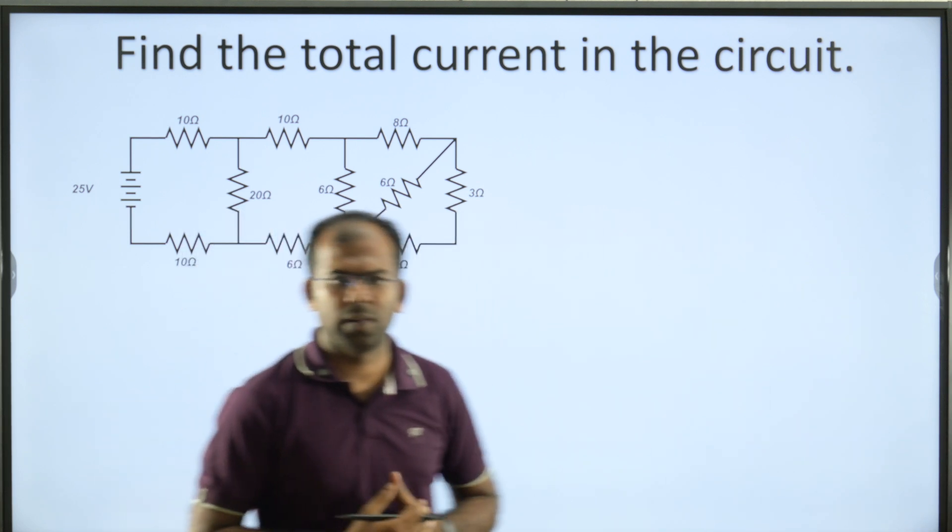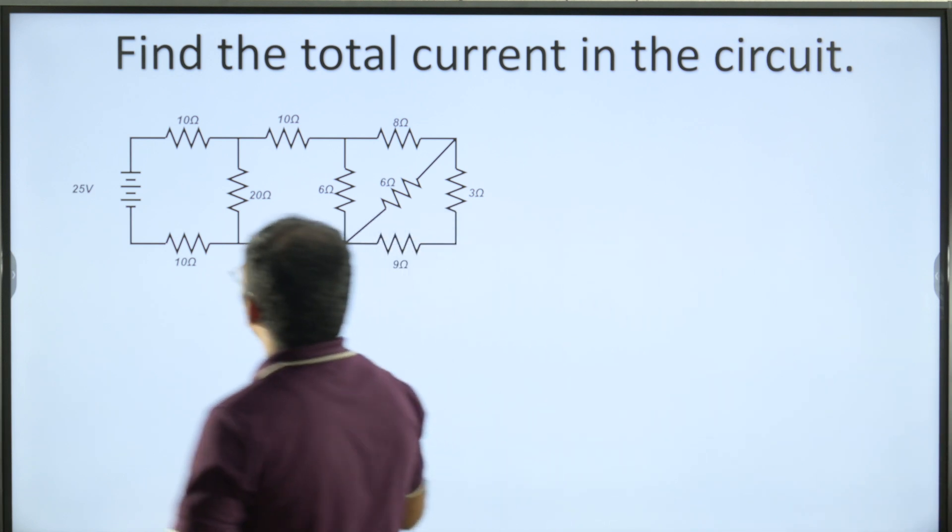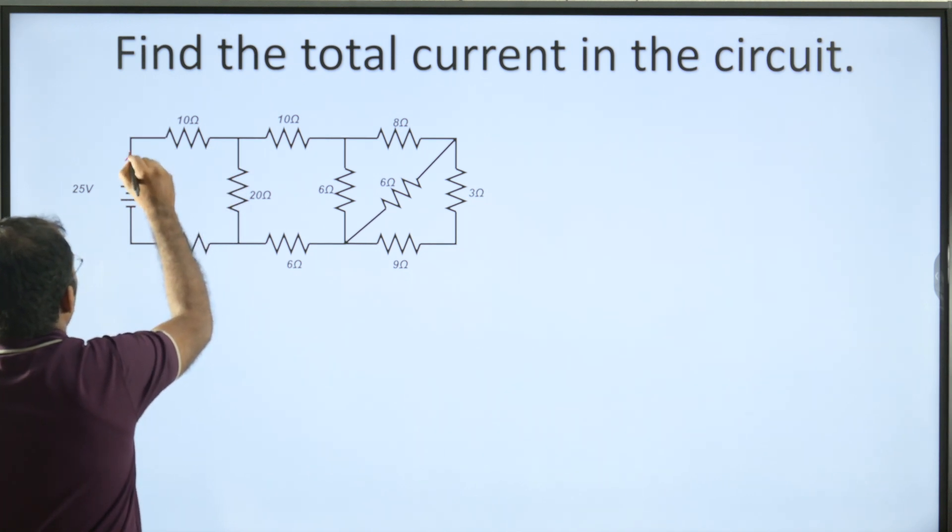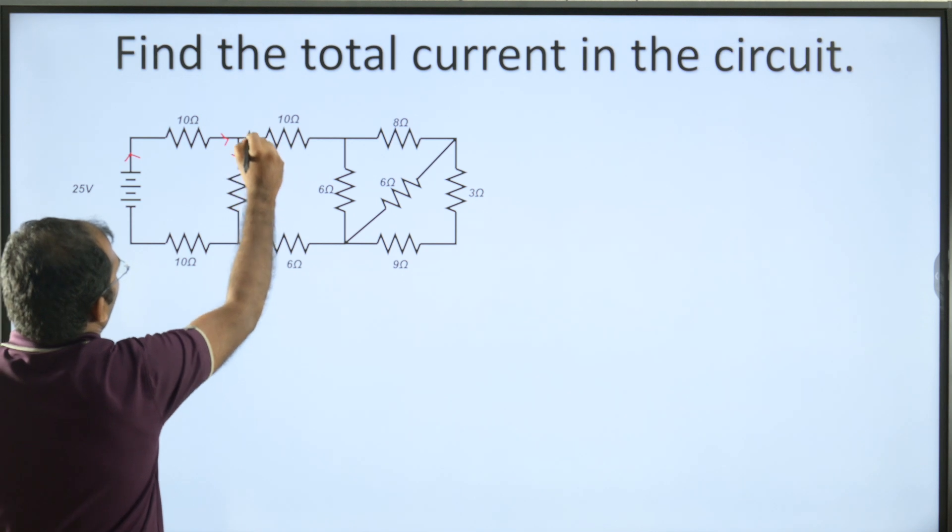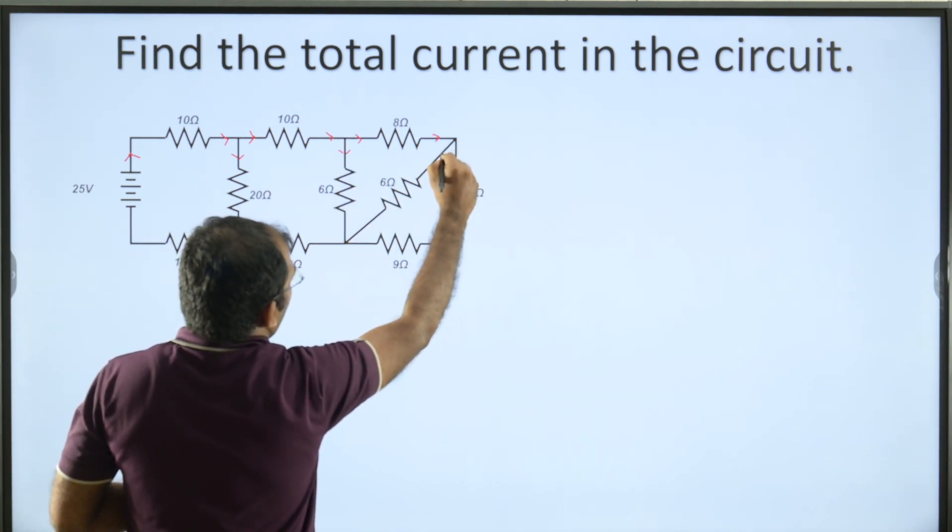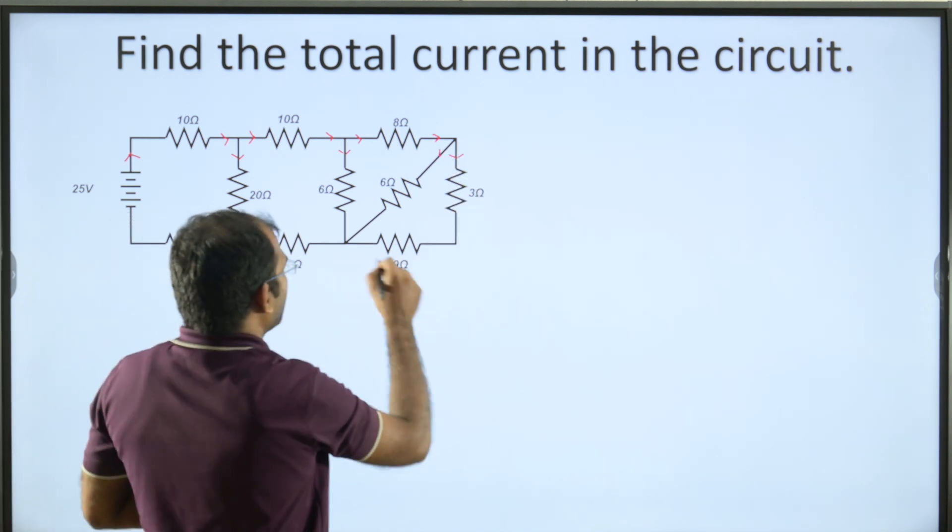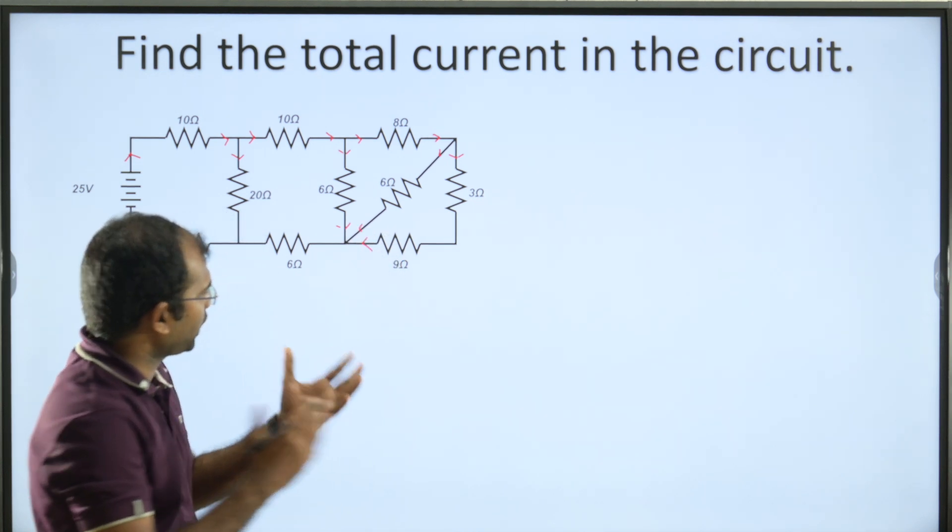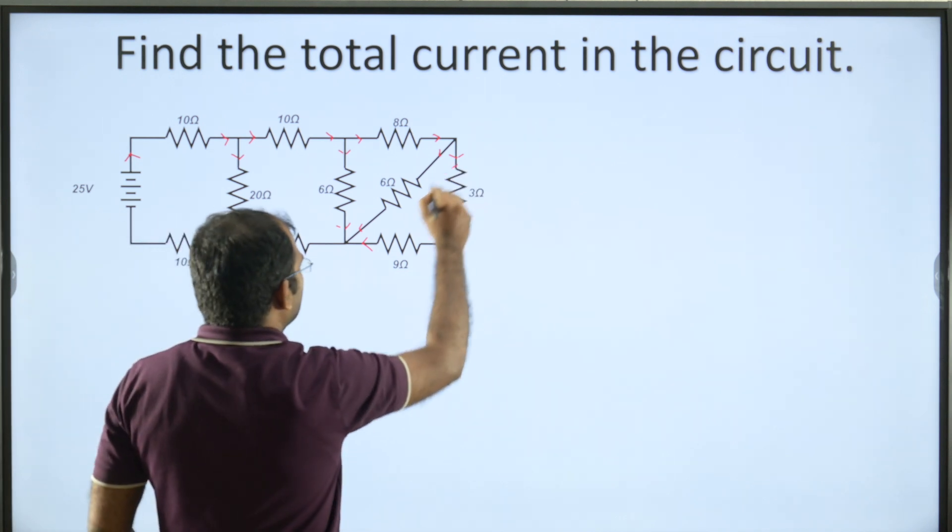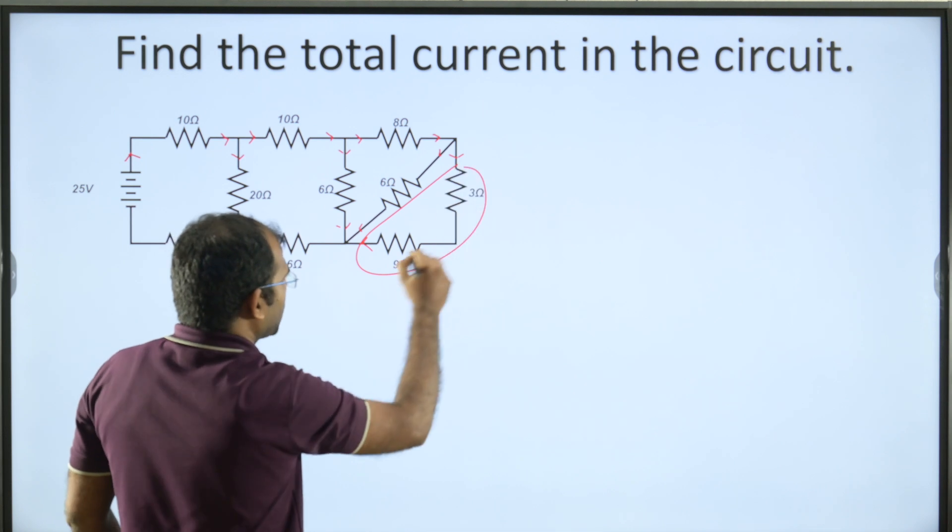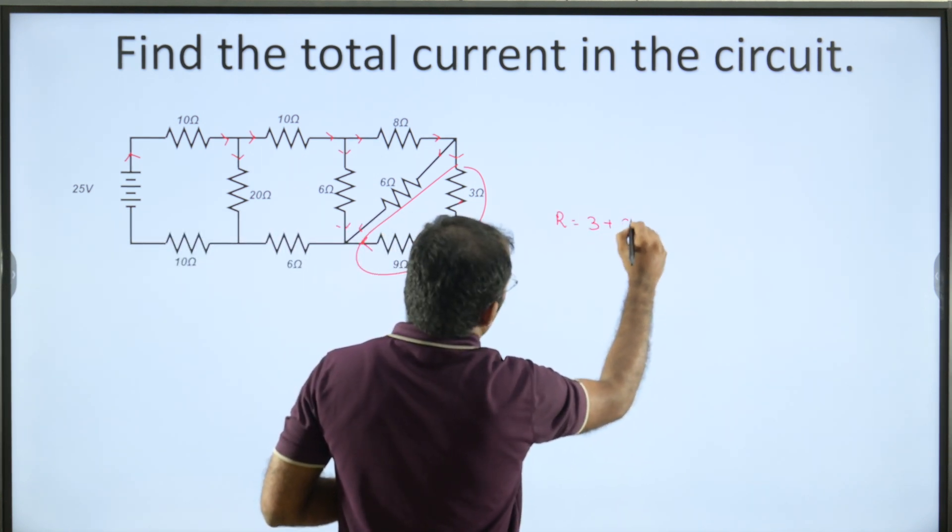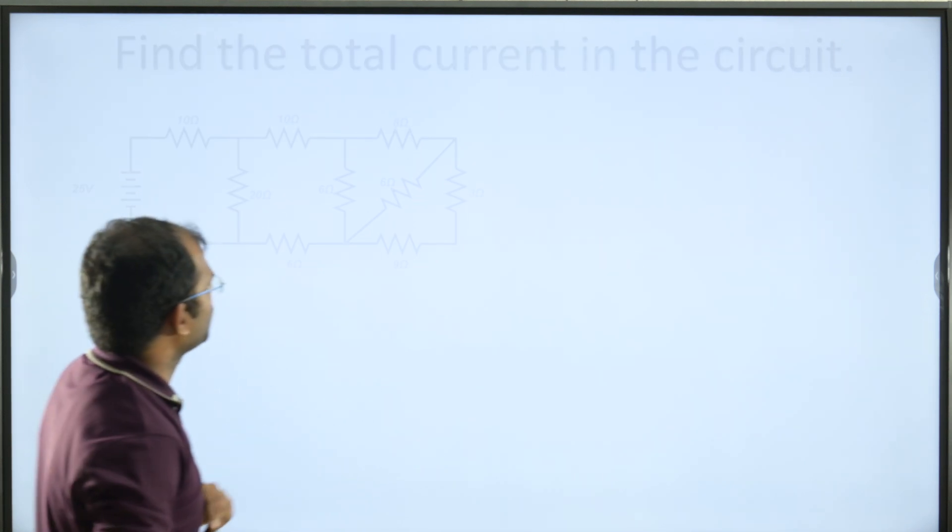Now let's perform the analysis of the circuit. Current flows from this battery, where it has broken into two segments, again divided into two segments. The current crosses and connects at various points. Where the current joins, these networks are in series. Series addition gives R equals 3 plus 9, which equals 12 ohms.